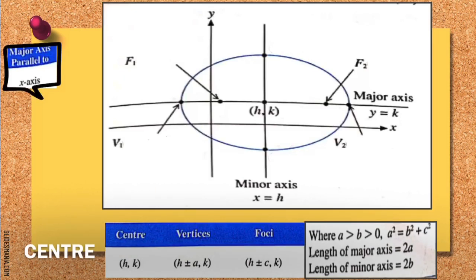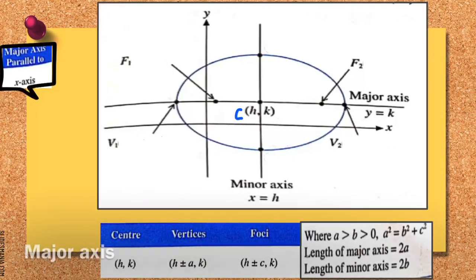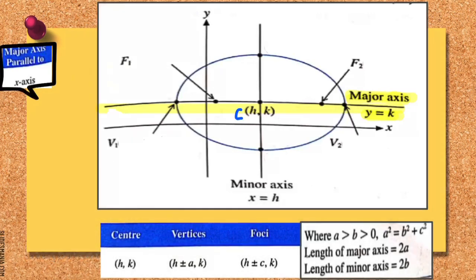First of all, let's identify our center. Our center is at the middle point here, which is your center at (h, k). When we have our center here, we can identify that we have a major axis in the horizontal line, which is parallel to our x-axis. Let me highlight here — this is your major axis, and your major axis is the line y equal to k.